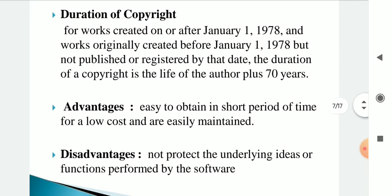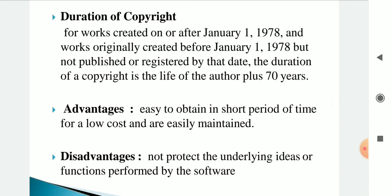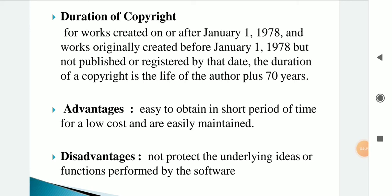The duration of copyright for works created on or after January 1, 1978, and for works originally created before January 1, 1978 but not published or recognized by that date, is the life of the author plus seventy years. The advantages are that copyright is easy to obtain in a short period of time, for low cost, and is easily maintained. The major disadvantage is that it does not protect the underlying ideas or functions performed by the software.